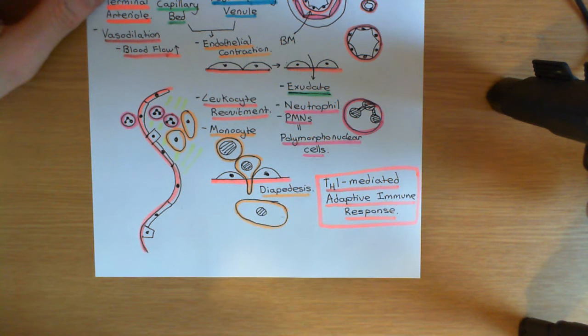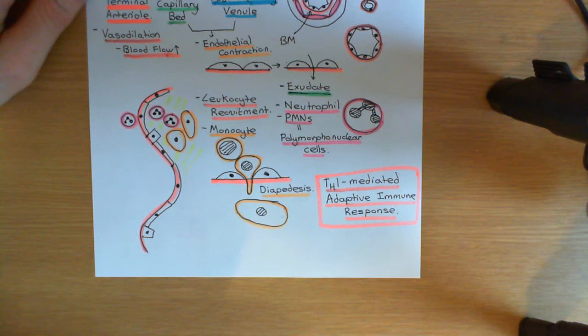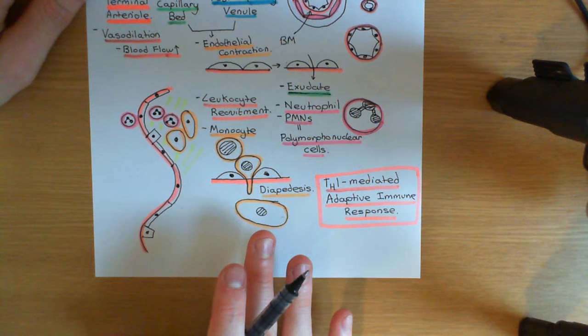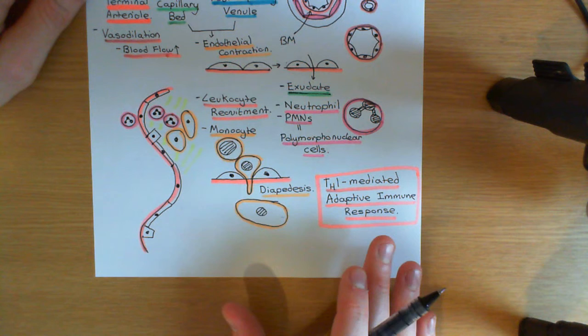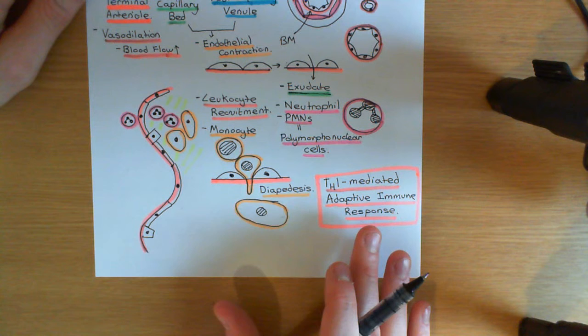Welcome back to this next video in which we are discussing sarcoidosis. We're currently in the process of discussing the pathogenesis of tuberculosis because of the incredible similarities between tuberculosis and sarcoidosis, and the fact that tuberculosis is much better understood than sarcoidosis. So it's a good disease to study in order to gain some insight about sarcoidosis.